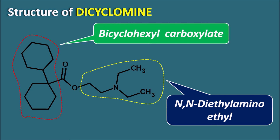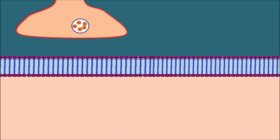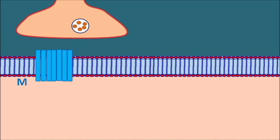Dicyclamine is an anticholinergic with ester functionality. Now let us see how this drug acts as antispasmodic. At the GI tract, cholinergic transmission produces muscle contraction. At the GI smooth muscle, muscarinic receptors are present which are activated by acetylcholine. This acetylcholine is released from the cholinergic neurons and acts on the muscarinic receptors.